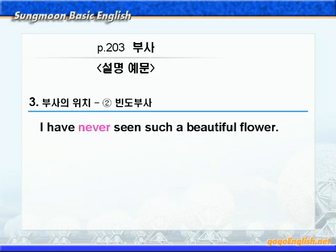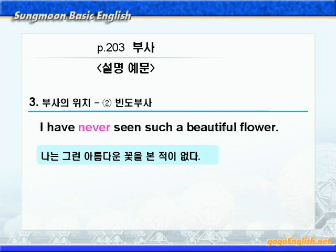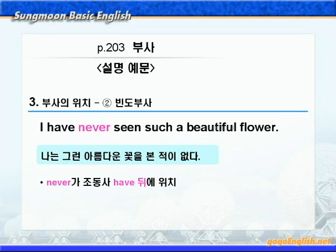'She is generally an early riser.' generally는 '보통, 대개' 이런 뜻이니까 '그녀는 보통 일찍 일어나는 사람이다', 즉 '그녀는 보통 일찍 일어난다' 이런 뜻이죠. 빈도 부사 generally가 be동사 is 뒤에 왔죠. 'I have never seen such a beautiful flower.' 이번엔 '결코 ~않다' 이런 뜻을 가진 never가 나왔습니다. '나는 그런 아름다운 꽃을 본 적이 없다' 이런 말이죠. have never seen을 보세요. 빈도 부사 never가 조동사 have 뒤에 왔죠. 완료형의 문장일 경우에는 빈도 부사를 조동사와 과거분사 사이에 넣어주어야 합니다.